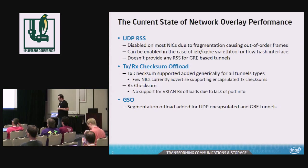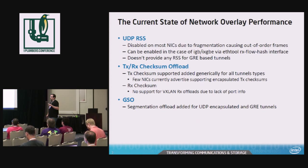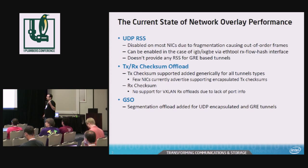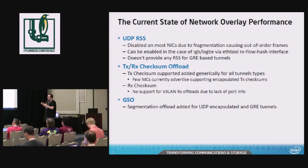Right now, the way things are currently set up, most tunnels on most hardware will end up on a single queue if you're dealing with any two endpoints on a tunnel. At least in the case of our hardware, we're using RSS, which only understands TCP and UDP. So when you go beyond that into VXLAN or NVGRE, you end up losing the data that's inside the tunnel.